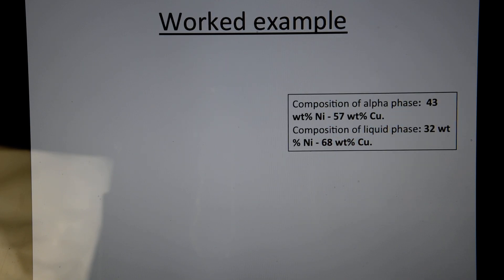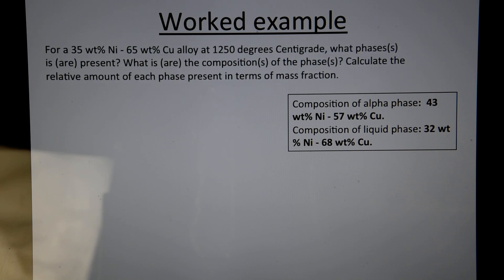Now I'll go through a worked example, just to help you understand lever rule and the tie line. Now this question says, you have 35 weight percent of nickel, which is the same as 65 percent weight of copper. And this is at 1250 degrees Celsius or degrees centigrade. The question is asking, how many phases are present? Or what phase is present? What is or are the compositions of the phase? And calculate the weight percent or the mass fraction.